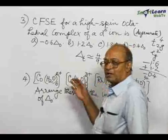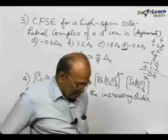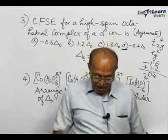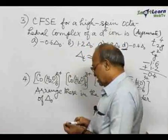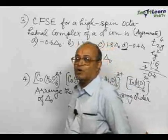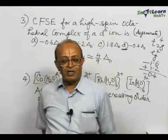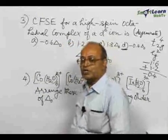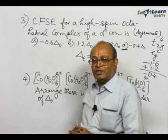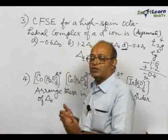Here we have two cobalt complexes, one rhodium, and another iridium. The question is to arrange these in the increasing order of delta O for these 4 complexes. You need not remember the delta O values, but you should remember in what way this delta O value will change from one complex to another.